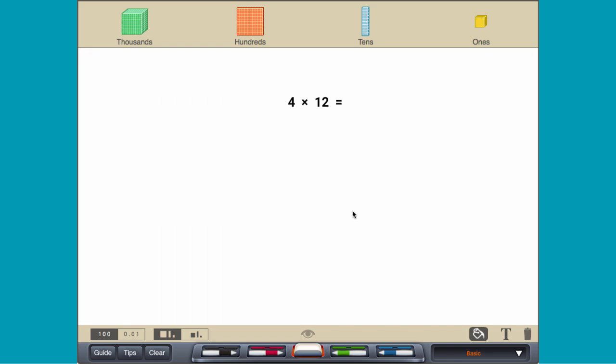Multiplication can be thought of as one number telling how much to take of the other number. So multiplying 4 by 12 is like finding 4 groups of 12.